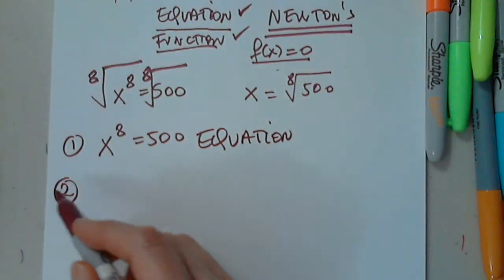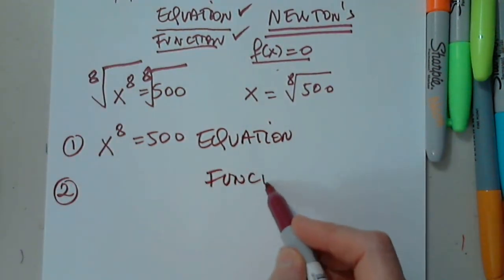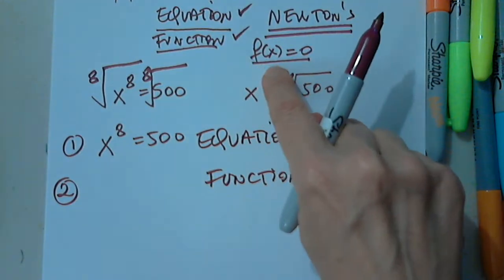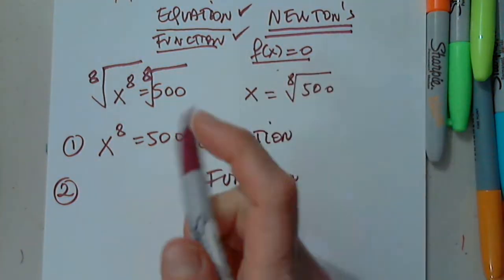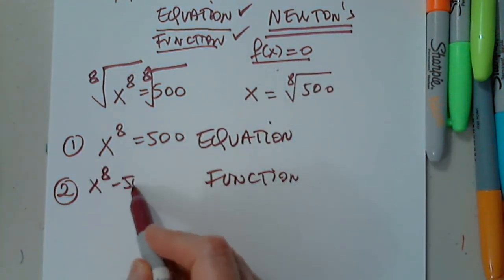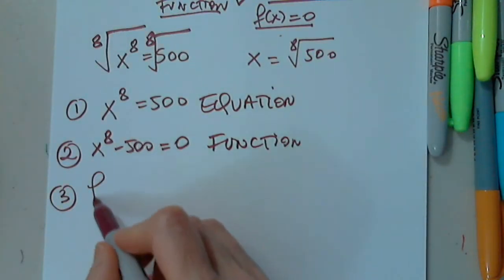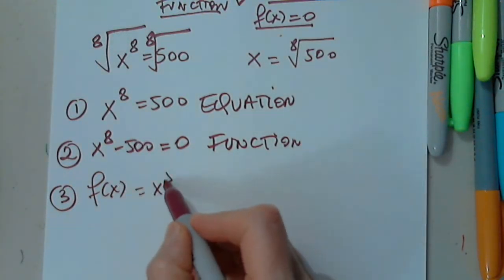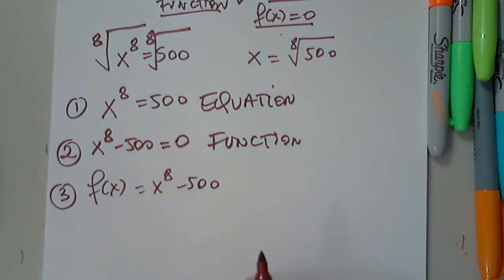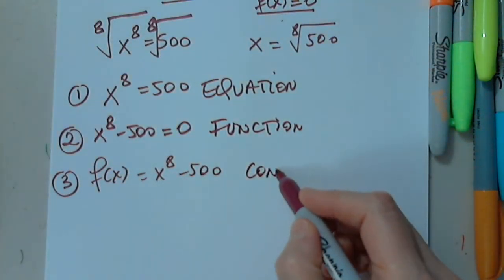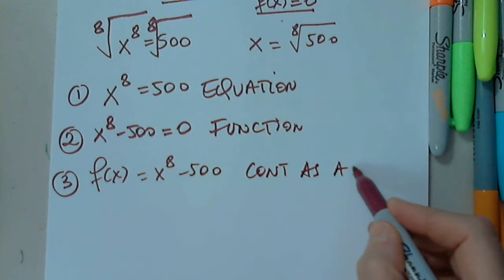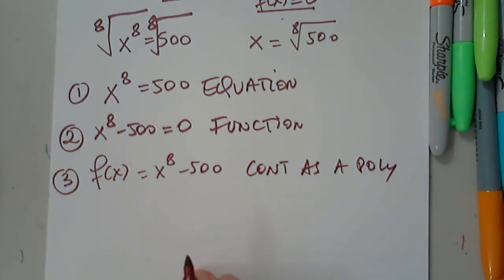Number two, I have to have a function. Have to have a function that is set equal to zero. No problem. So I have the equation, I have the function. Number three, I have to say that f of x equals x to the eighth minus 500. Continuous as a polynomial function.